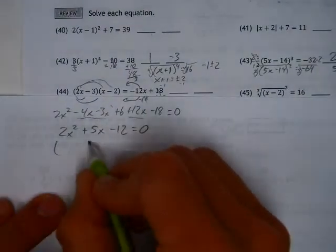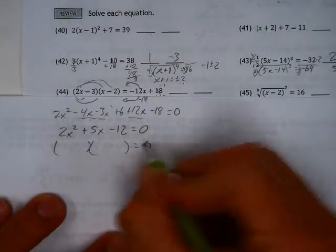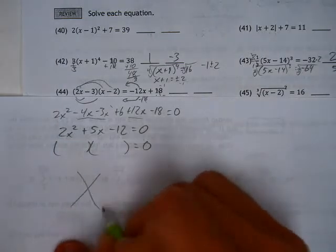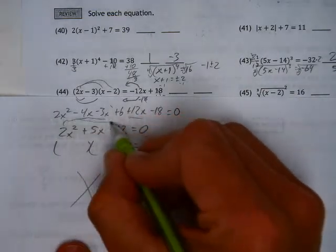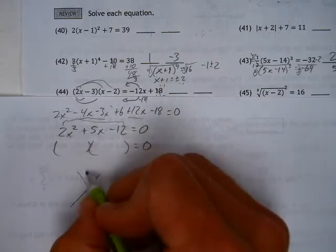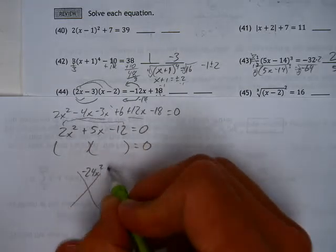This will factor, but it might take you a couple steps. We've done the diamond followed by the box, but the diamond needs to be produced by multiplying those. You get your negative 24x squared.